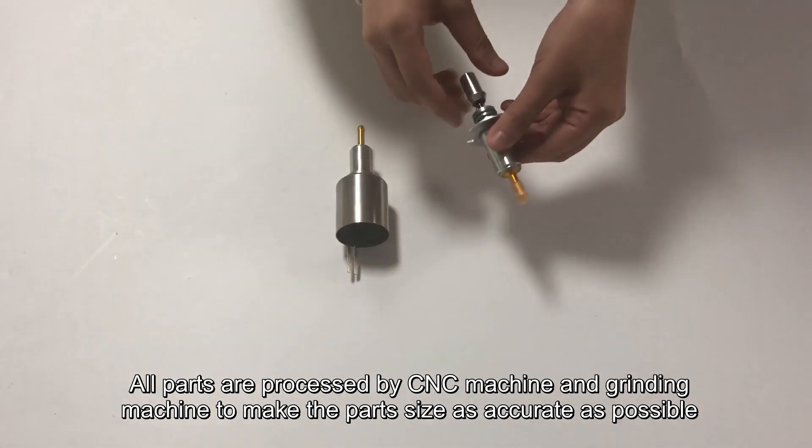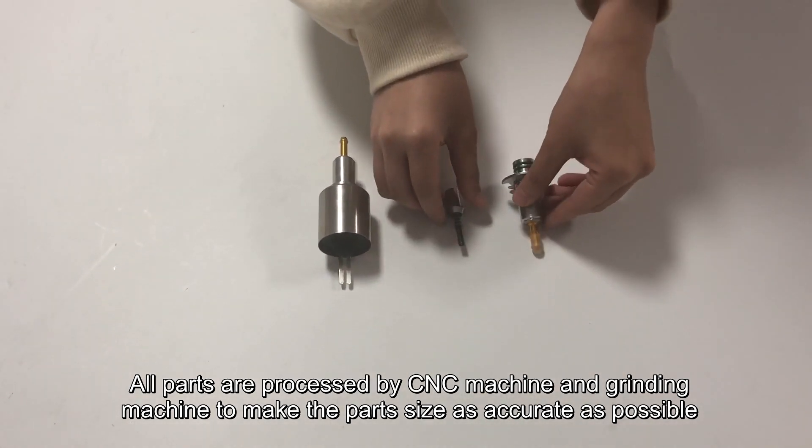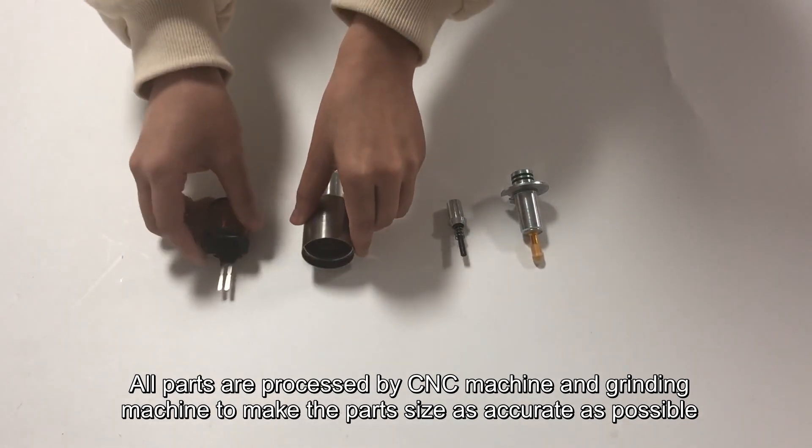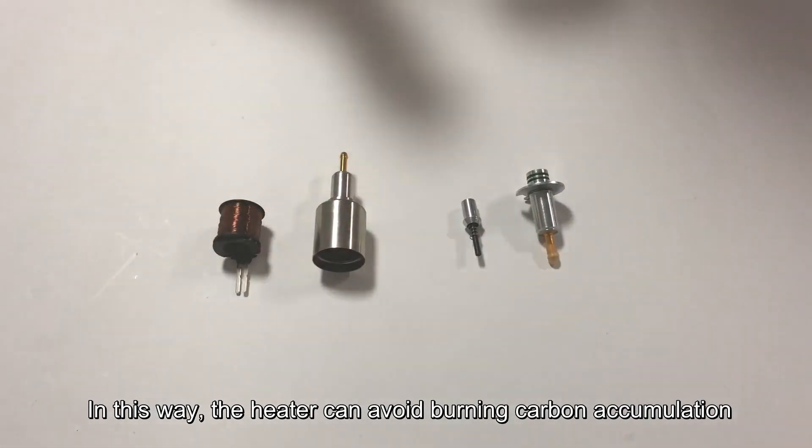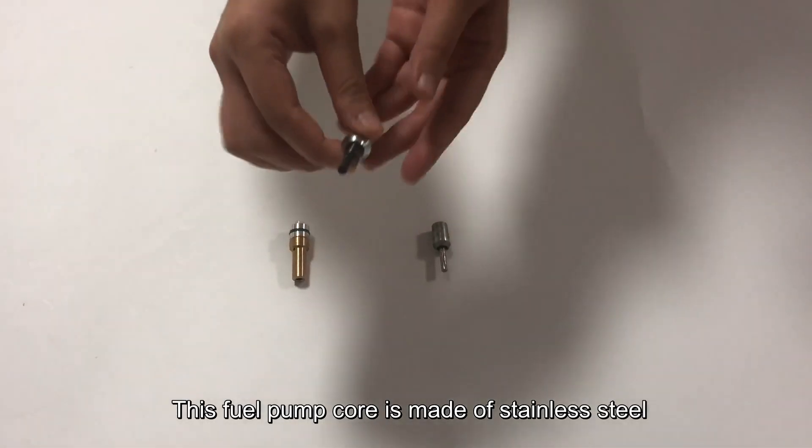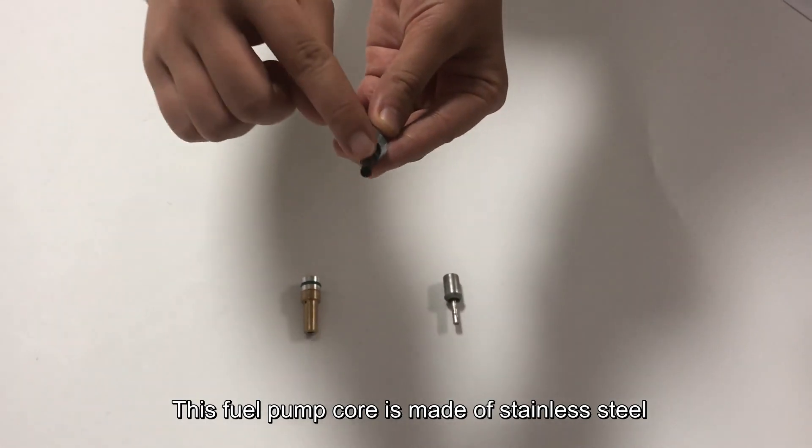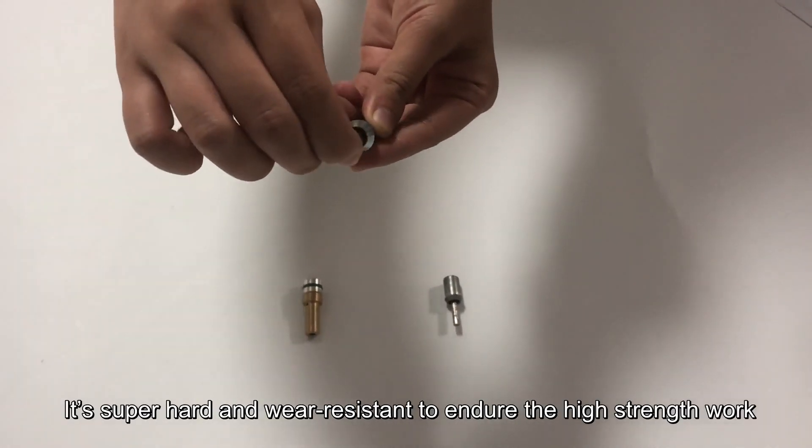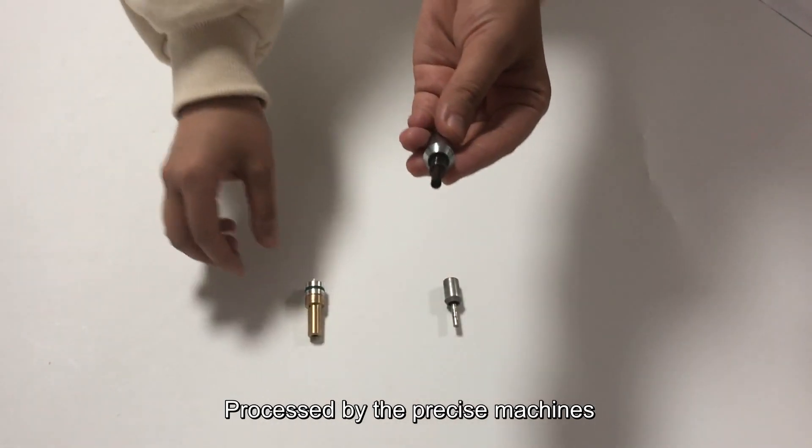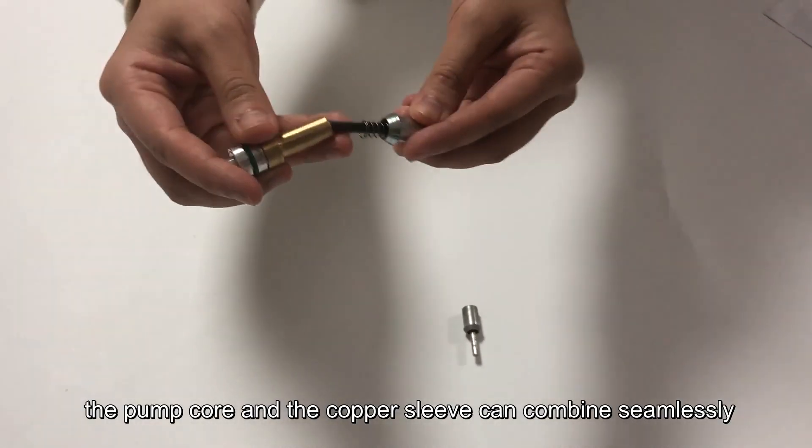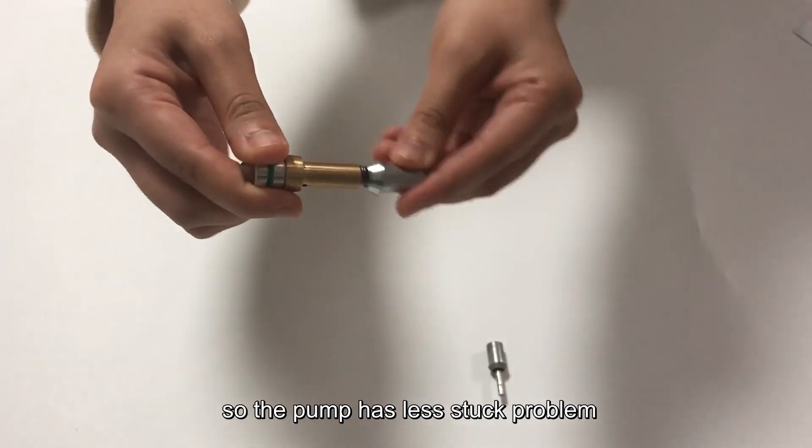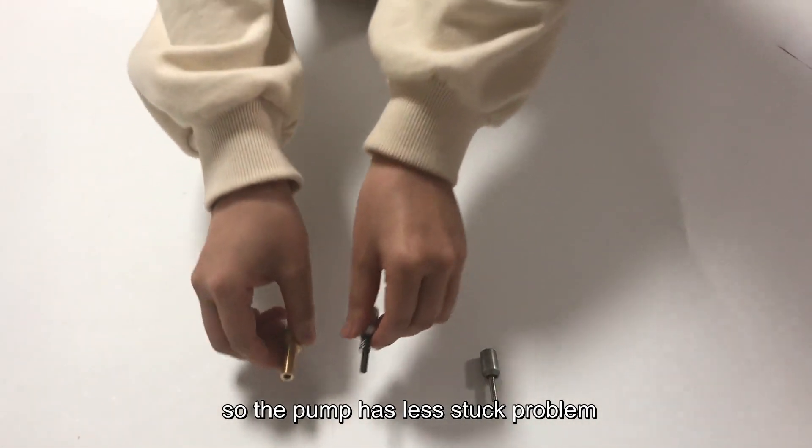All parts are processed by CNC machine and grinding machine to make the part size as accurate as possible. In this way, the heater can avoid burning carbon accumulation. This fuel pump core is made of stainless steel. It's super hot and wear resistant to endure the high-strength work. Processed by the precise machines, the pump core and the copper sleeve can combine seamlessly, so the pump has less stuck problems.